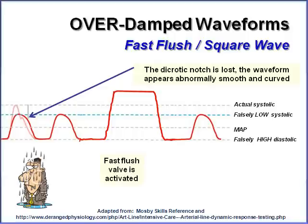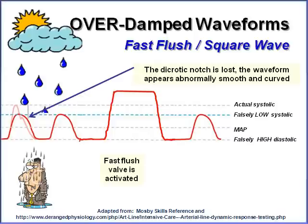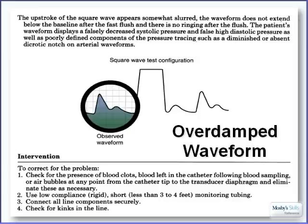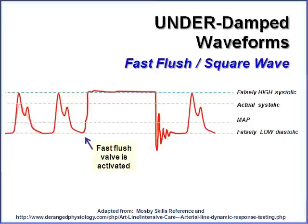Overdamped versus underdamped can be a difficult concept. Think of it this way: if I walk out in the rain and get my hair wet, my damp hair is going to go flat. So the waveform is getting rained on, causing it to dampen or squish down — you have none of the oscillations seen in an optimally damped waveform. In another example of an overdamped waveform, there are no oscillations and it's slow — not a snappy square, but slow to go up and slow to come back down.